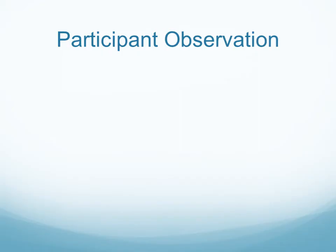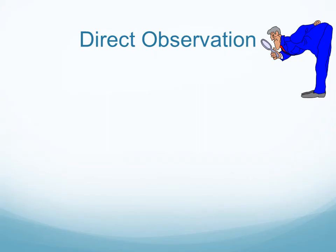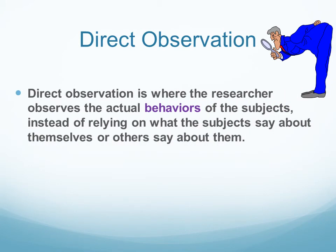Qualitative research methods include many different approaches. There's participant observation, where the researcher literally becomes part of the observation — for instance, walking the streets to study homeless people to understand and possibly gain access to subjects. There's also direct observation, where you observe the behaviors of subjects instead of relying on what subjects say about themselves. For example, at the University at Buffalo's Early Childhood Research Center, researchers observe children playing on the playground to study their interactions during early adolescence.